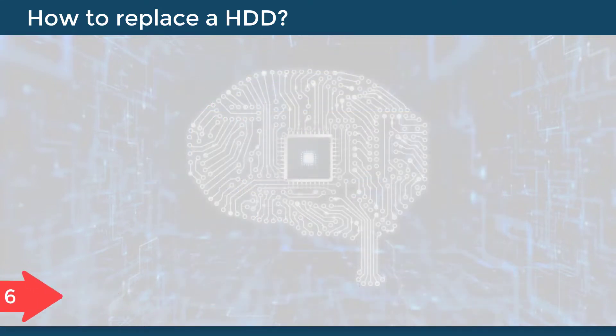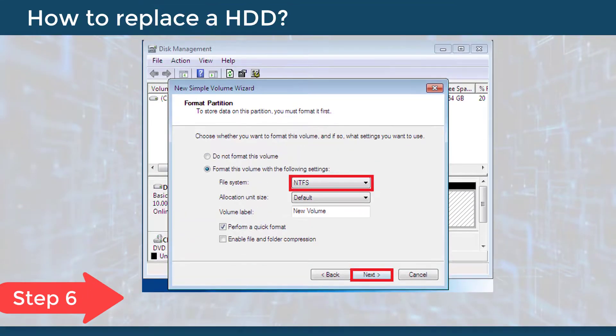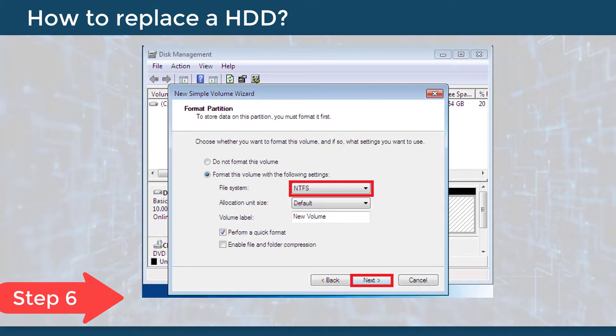Step 6: Choose the file system — FAT32 or NTFS — and click Next.